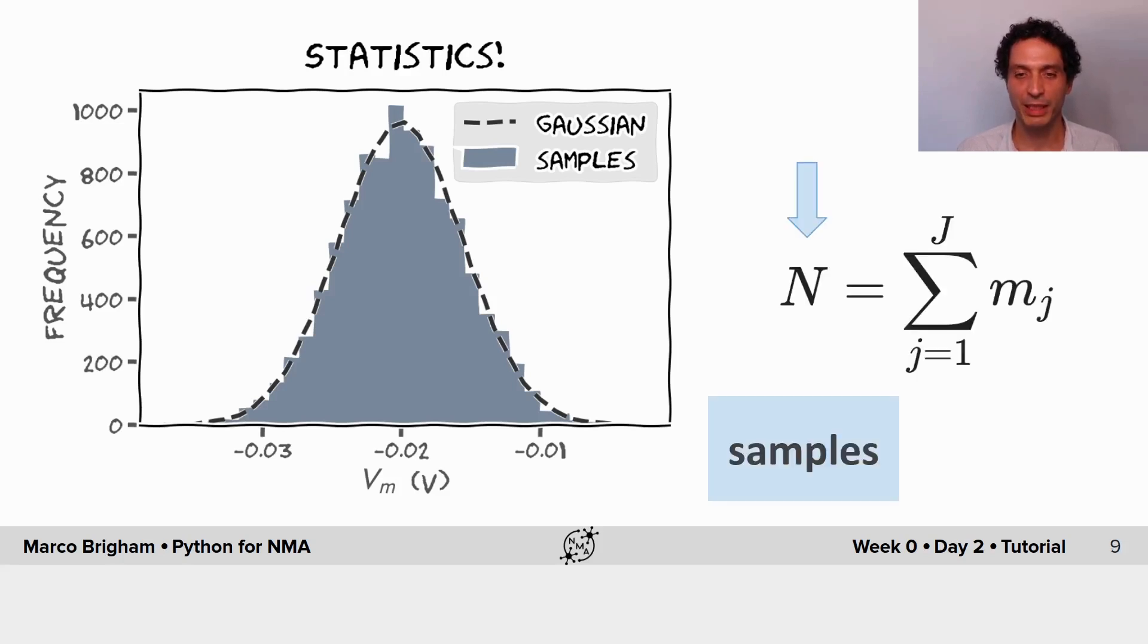So let's say we have big N samples and then we set some bins, number of bins, 16 bins, 32 bins, a certain number of bins, and then we have a function here, mj, that counts the number of samples that fall within the range of each bin.